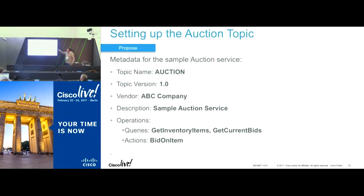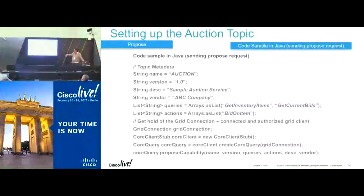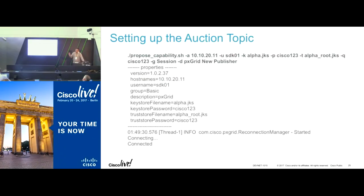In this case, the auction topic is published by a publisher where the topic name is auction and the vendor name is ABS company. The queries it entertains are get inventory items and get current bids, and the action it entertains is bid on a particular item. This is a code sample on how the proposal goes — you can see the name, the vendor name, the APIs, and the actions that the publisher is specifying. In the SDK that we provide — we did a DevNet session yesterday — we have given sample scripts on how to run these scripts and create a new topic dynamically on a PXGrid network.